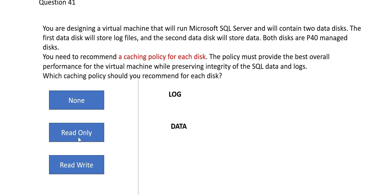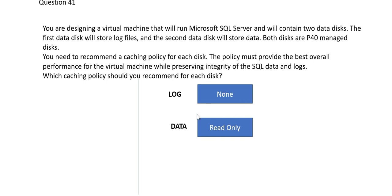Cache is never read and write both — write happens directly to the database, either through AZ Copy or ADF (Data Factory). You don't first write to the cache and then through the cache to the database. Cache is either no cache or read-only. The main purpose of caching is to help applications read data from the database faster. So the answer is: none and read-only.